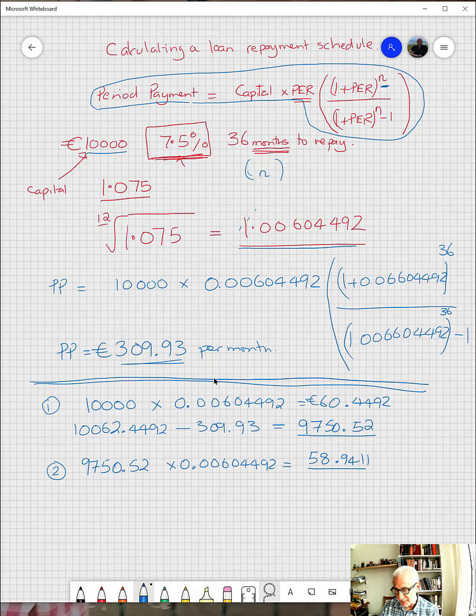So that is how much interest they would add on. So the next piece then is to say that plus that, take away the repayment, is going to be what figure? Well, when you do that: 9750.52 plus the interest minus the repayment, which we've already calculated.